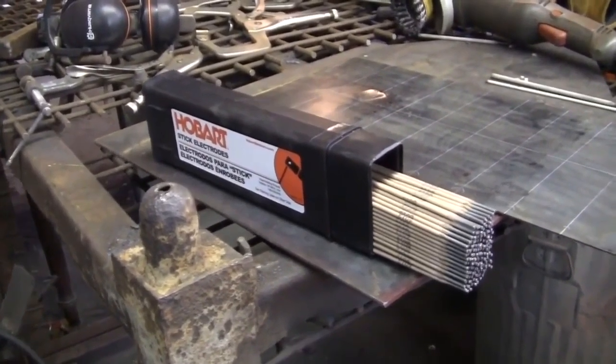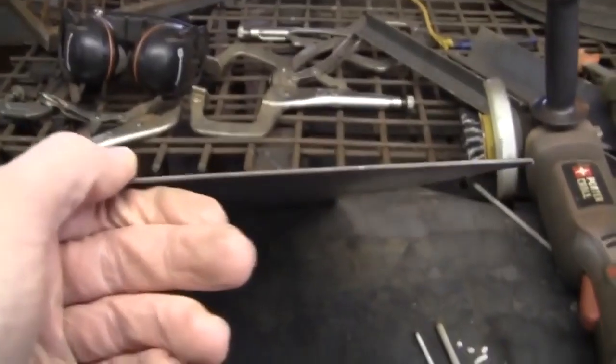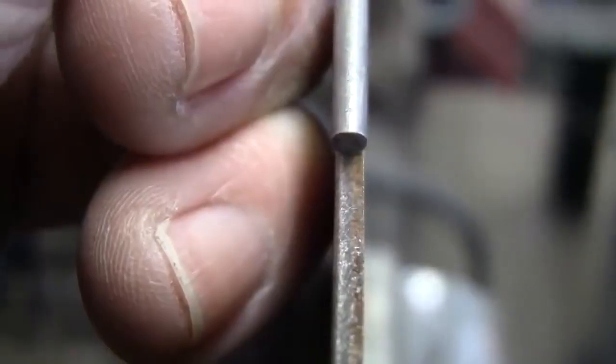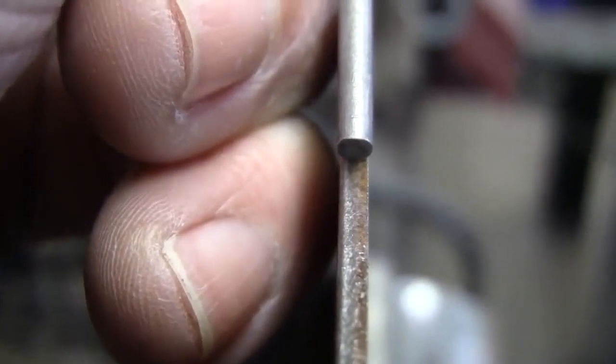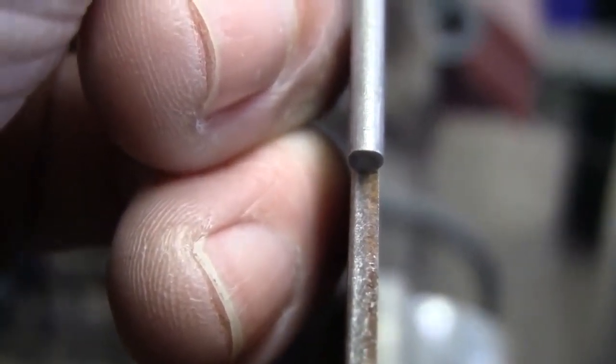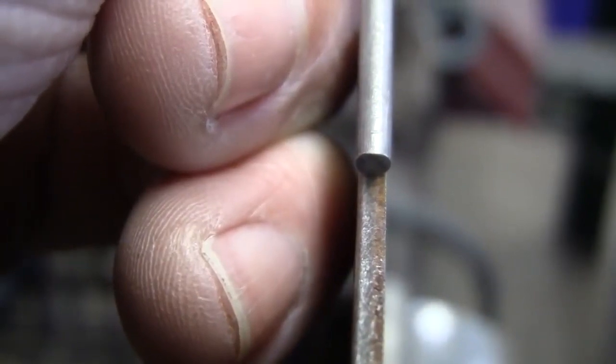They are 3/32 inch Hobart 6013s. And we're going to be welding this fine piece of sheet metal here. This is 14 gauge and the cool thing about 14 gauge is that 14 gauge means the same thing as 3/32 of an inch. So as you can see this is one of those fine 3/32 inch electrodes that I just showed you all a second earlier here.